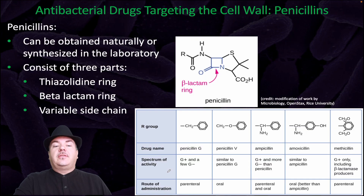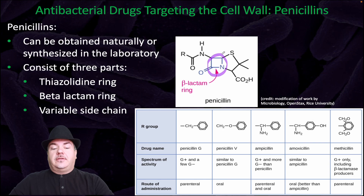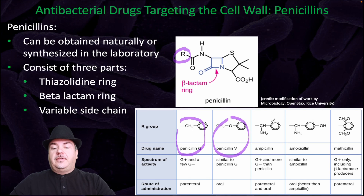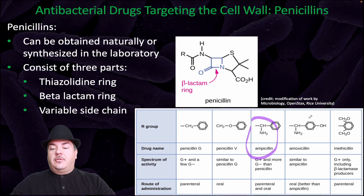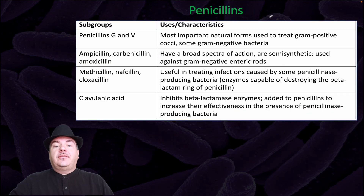Penicillins can be obtained naturally or synthesized in the laboratory. They consist of three parts: a thiazolidine ring, a beta-lactam ring, and a variable side chain, which distinguishes between the different types of penicillins — for example, ampicillin or amoxicillin. Penicillins G and V are the most important natural forms, used to treat gram-positive cocci and some gram-negative bacteria.